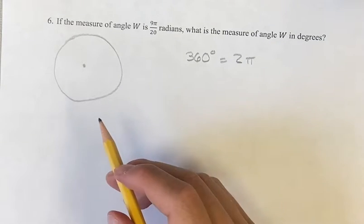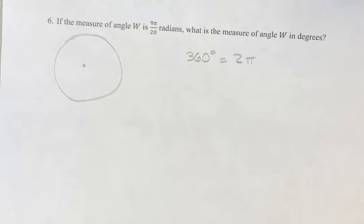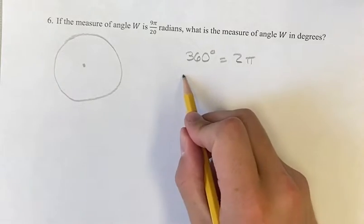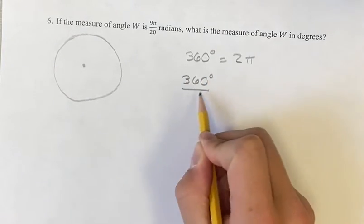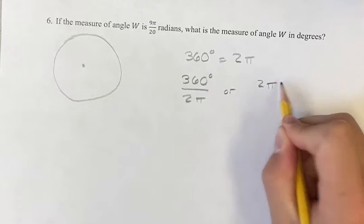So since these two are equal, this is basically just the definition of a radian. Since these two are equal, 360 degrees divided by 2π radians, or 2π radians over 360 degrees,